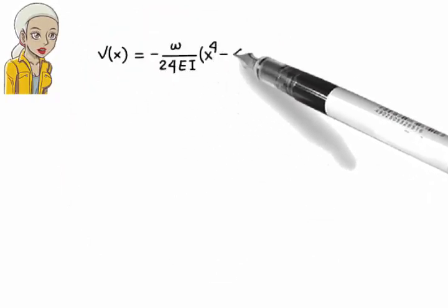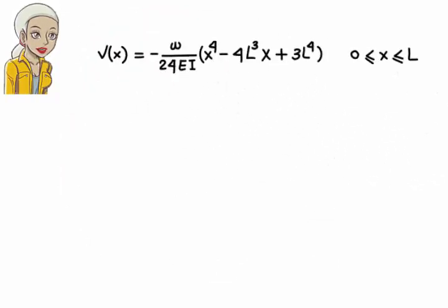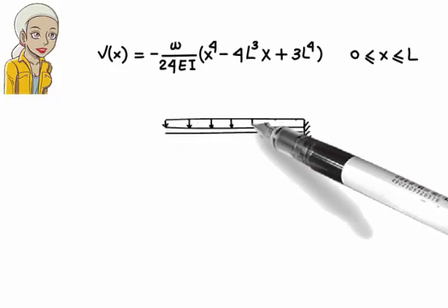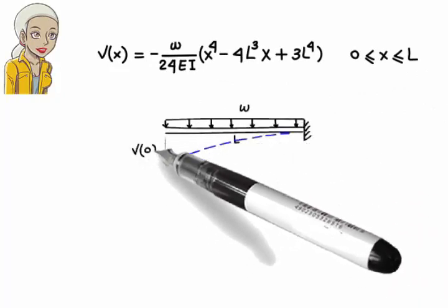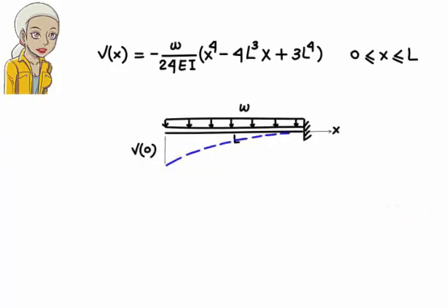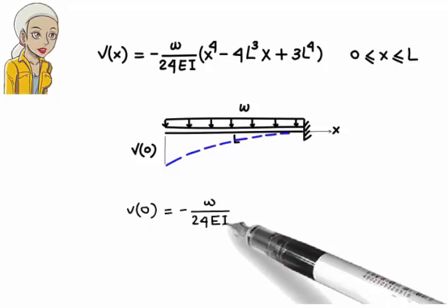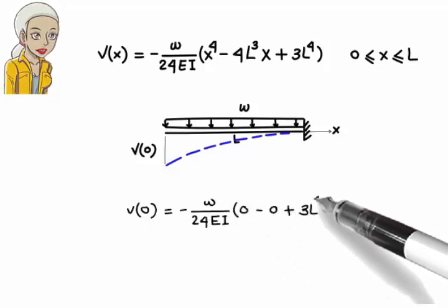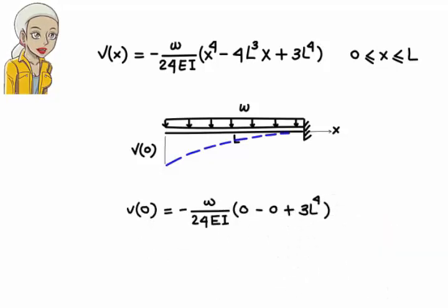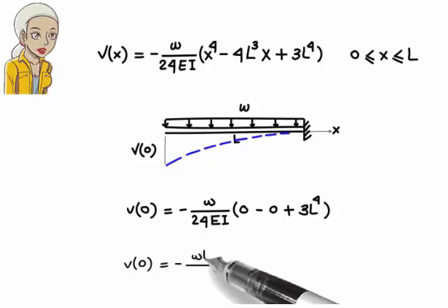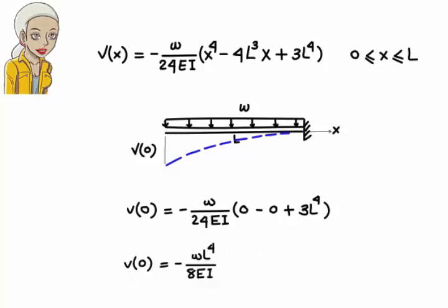Now, let's use the equation to determine the deflection at the free tip of the beam. Substituting 0 for x, I get v(0) equals negative w over 24EI times 0 minus 0 plus 3L to the power of 4. So, v at the free end of the beam equals negative wL to the power of 4 divided by 8 times EI.